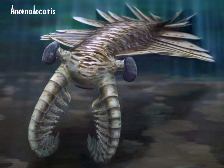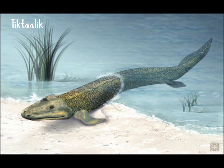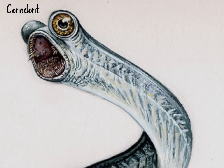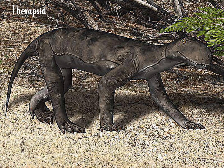Pikaia, anomalocaris — they look cool, look at that little guy — our beloved Tiktaalik, hallucigenia, conodonts, which are a genus made of nightmare fuel, and therapsids.